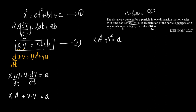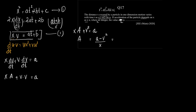So what is capital A from here? Capital A = (a − v²) / x. Now, what is v? From equation 1, v = (at + b) / x. So substituting into the expression for A: A = [a − ((at + b) / x)²] / x.